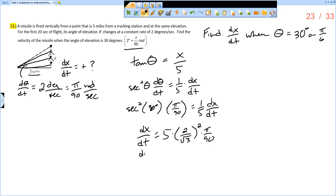So dx dt, if we're going to finish here. This would be four thirds. So five times four thirds times pi over 90.